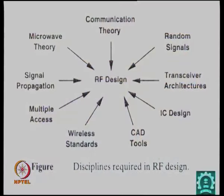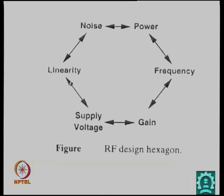A typical RF design requires communication theory, handling random signals, different architectures like homodyne and heterodyne, IC design criteria, CAD tools, wireless standards, multiple access systems like LMDS, and knowledge of signal propagation. The optimization parameters include gain, frequency, power, noise, linearity, and supply voltage — at least six dimensions, versus three in digital. There were three in digital, and now there are at least six, sometimes seven.